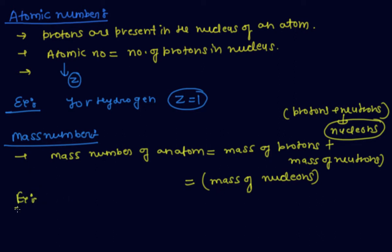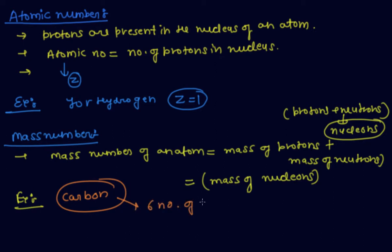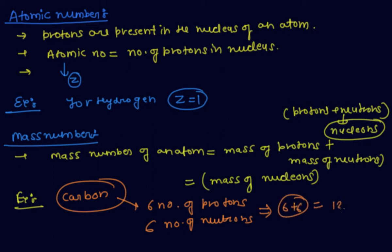Now we take an example. Carbon has six protons in the nucleus and six neutrons. The mass of protons and neutrons are nearly the same, so the mass number of carbon is 12u.